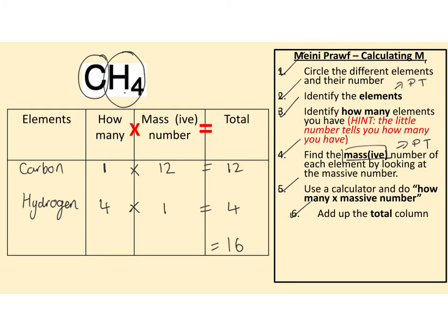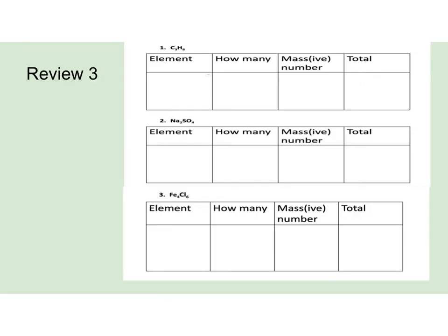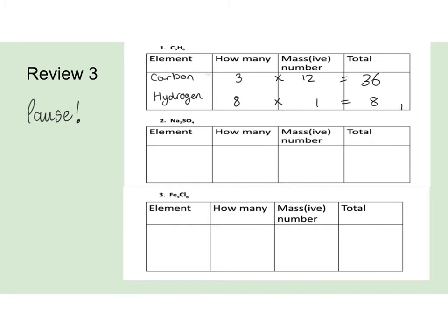I want you to have a go at these three now. You should have these in your notebook, or you can draw out the tables - but make sure you show your workings because they're often worth two marks. For C3H8: elements are carbon and hydrogen - three carbons and eight hydrogens. Mass numbers are 12 and 1: three times 12 is 36, eight times 1 is 8. Add them together: the total Mr is 44.